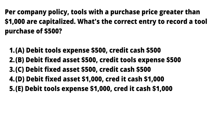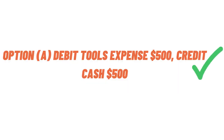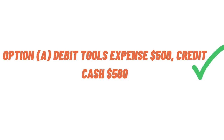Option C is debit fixed assets $500 and credit cash $500. Option D is debit asset with $100,000 and credit cash with $1,000. Option E is debit tool expense with $1,000 and credit cash with $1,000.